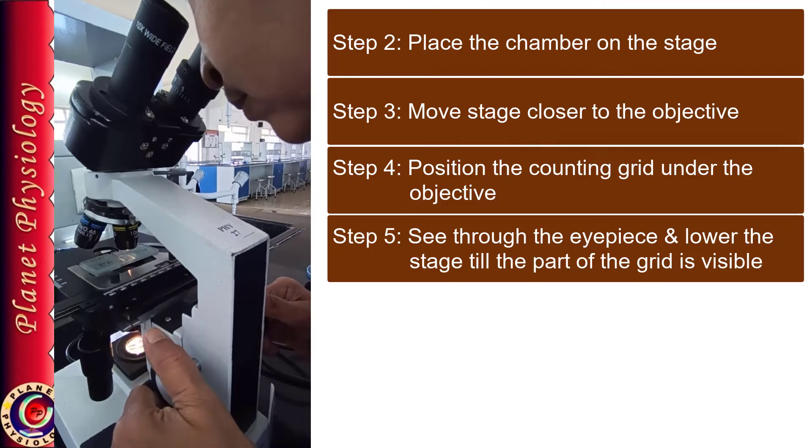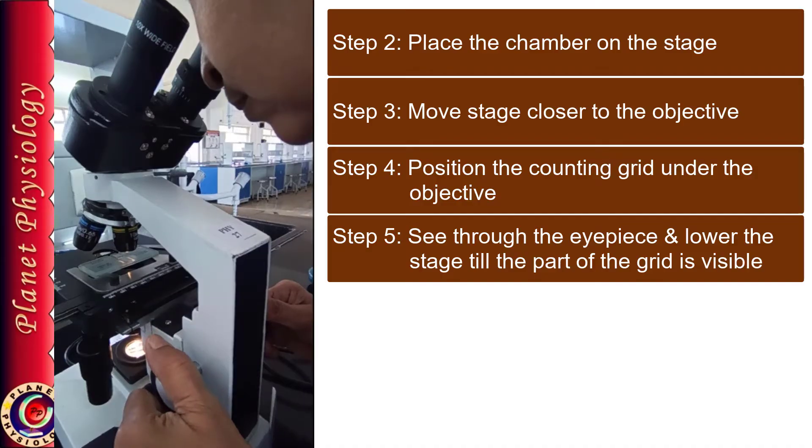I am using self illuminating microscope, so I am moving stage down. So I am repeating. See through the eyepiece and increase the distance between the objective and the chamber till you see some part of the grid.